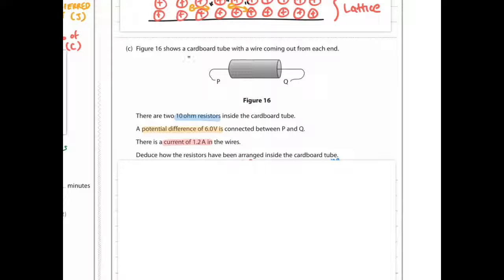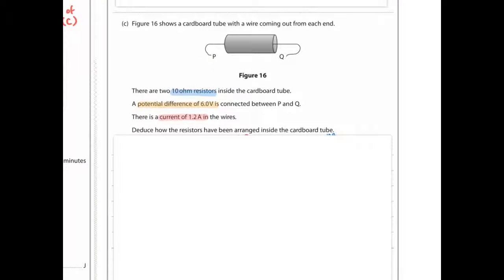Figure 16 shows a cardboard tube with a wire coming out from each end. There are two 10 ohm resistors inside the cardboard tube. A potential difference of 6 volts is connected between P and Q, and there's a current of 1.2 amps in the wires. We know there are two resistors inside here, and what we've got to work out is are they connected in series like this, or are they connected in parallel like this.